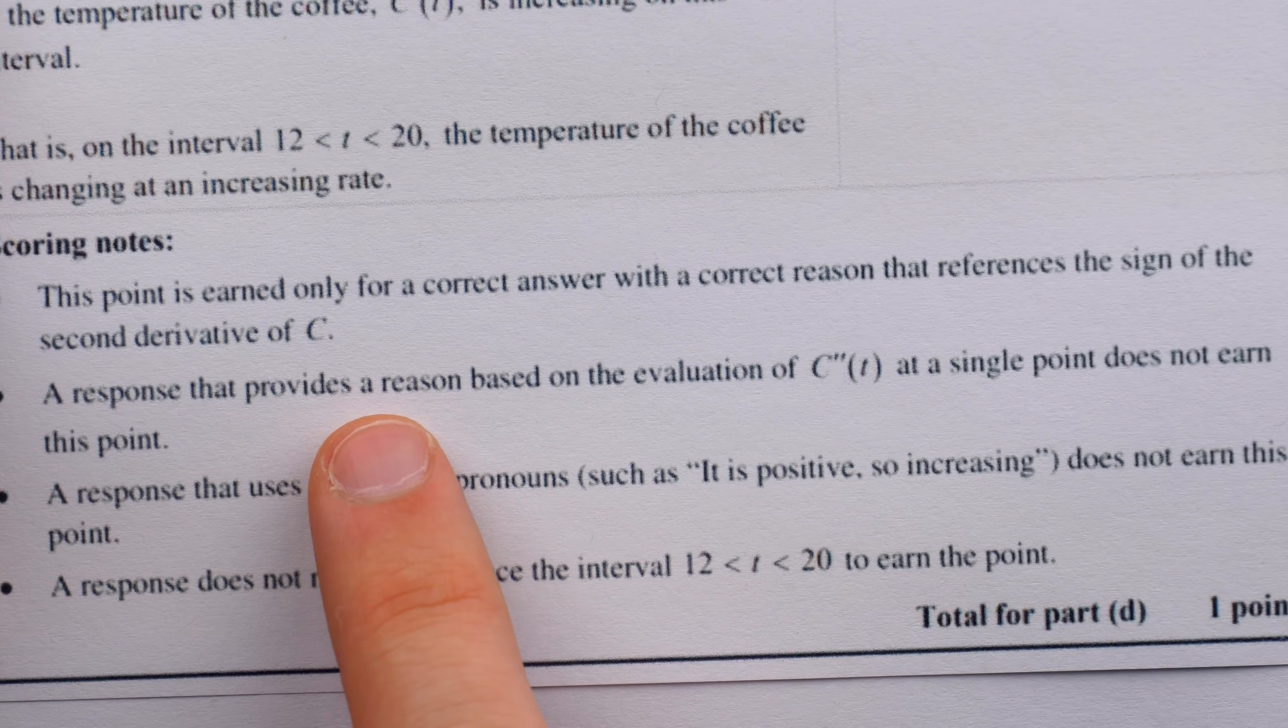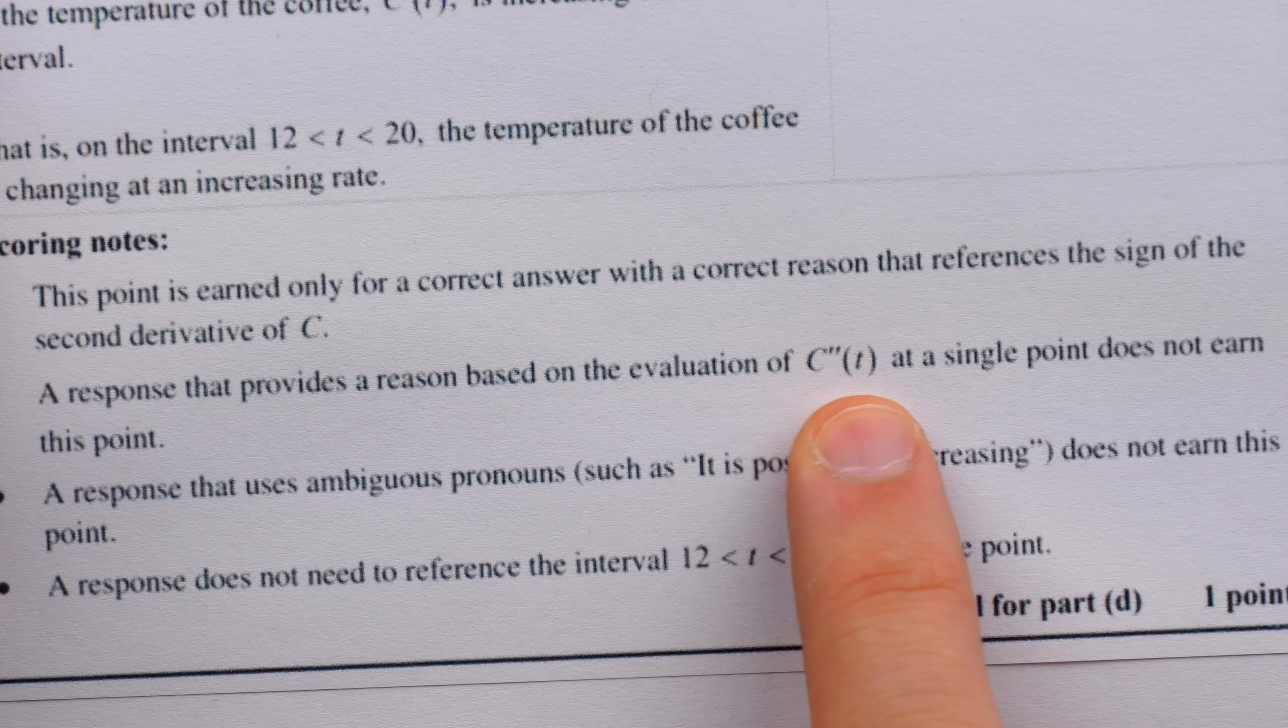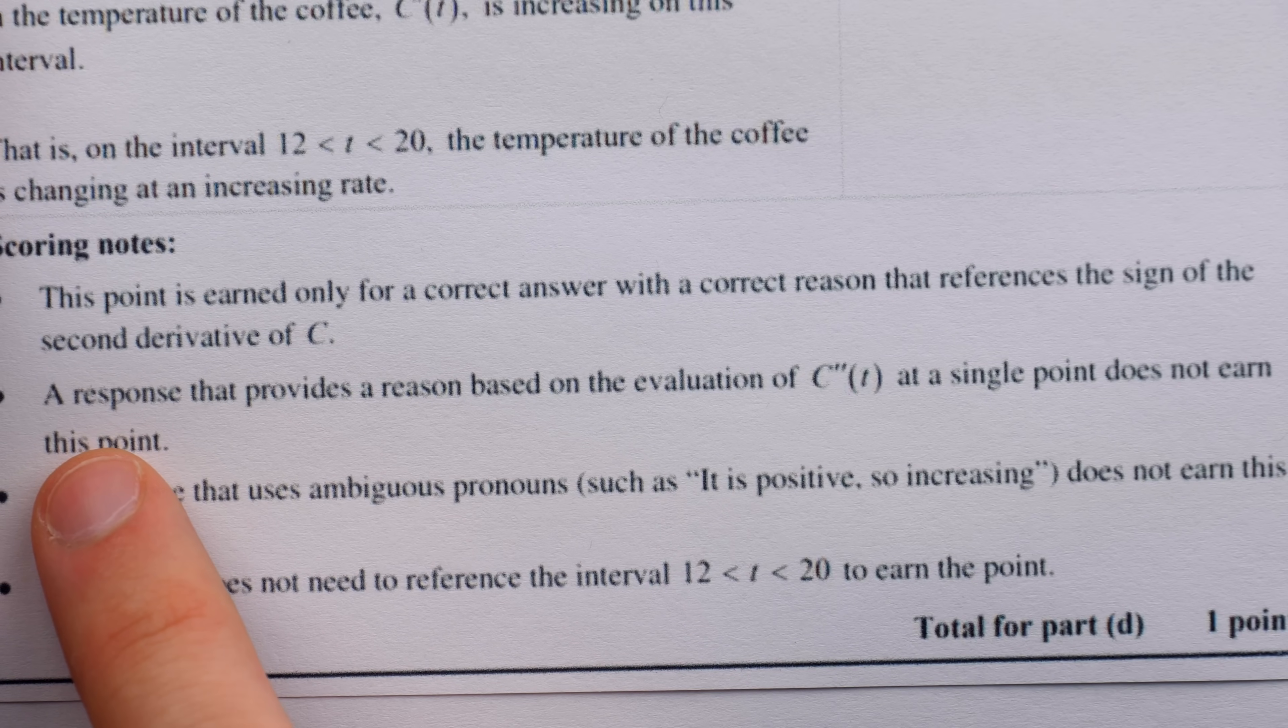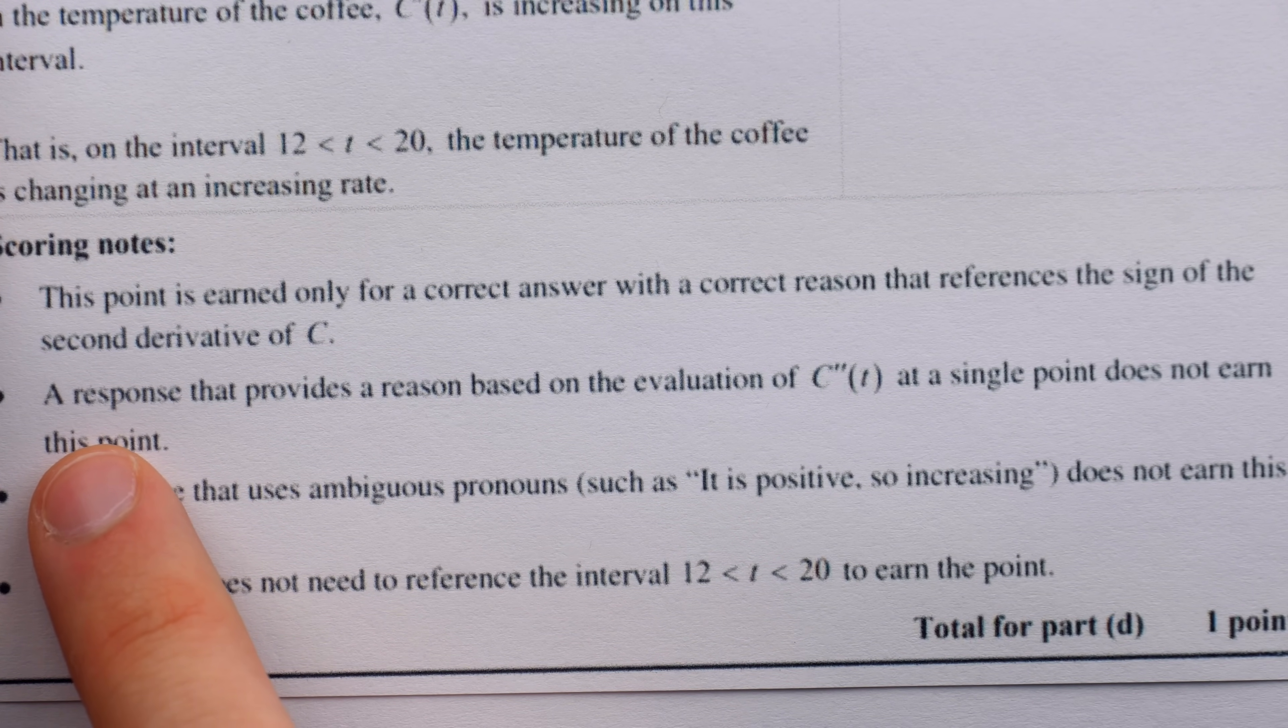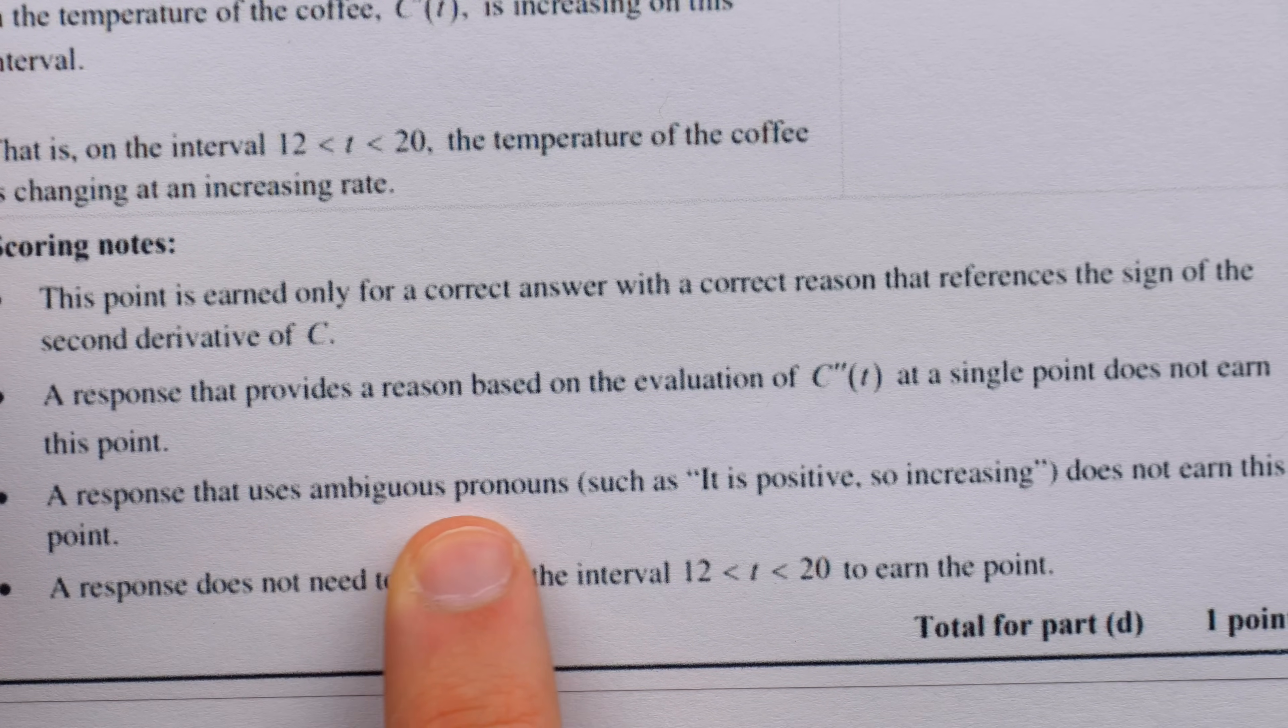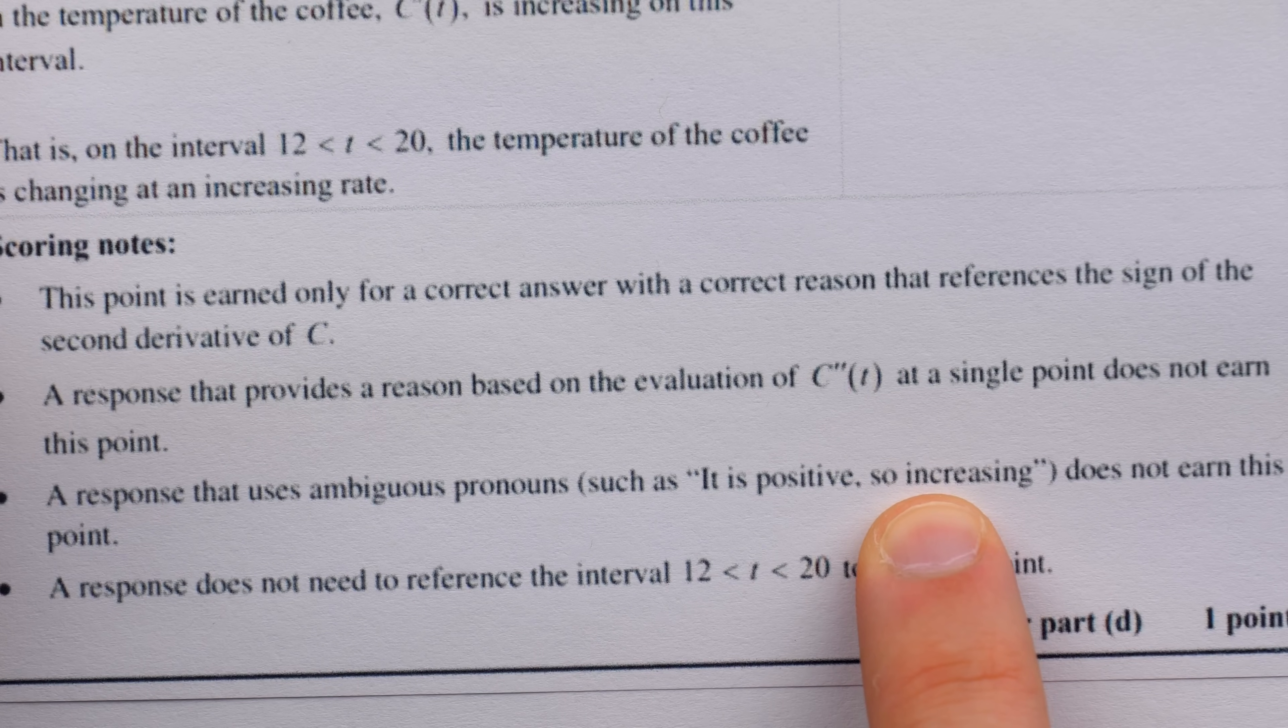Because the question is about the whole interval, they mention that a response that provides a reason based on the evaluation of the second derivative only at a single point does not earn a point for their response. Because the question is about the whole interval, you can't just look at a single point to answer a question about an interval. Additionally, a response that uses ambiguous pronouns such as it is positive, so increasing, would not earn a point either. Because we don't know what it is.